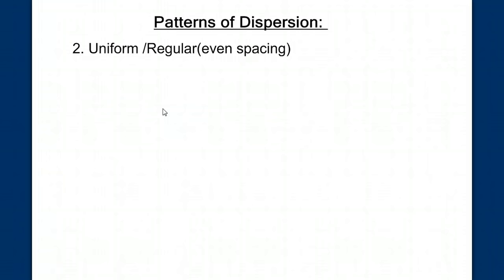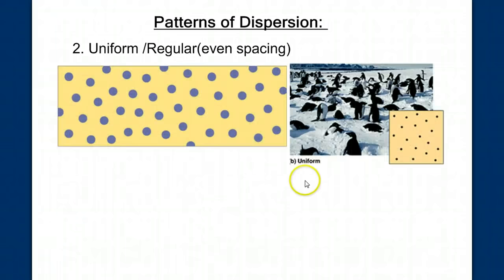Our next pattern of dispersion is uniform or regular, where we see an even spacing of organisms throughout the environment. Under what conditions would you see organisms spread out like this, with this kind of even spacing between them? Stop the video and write down why you think this could happen.